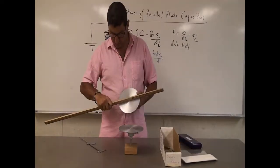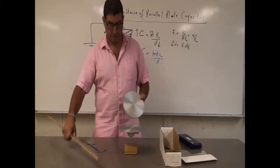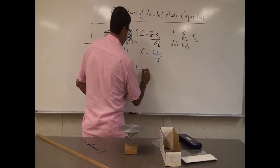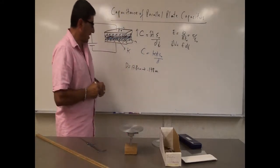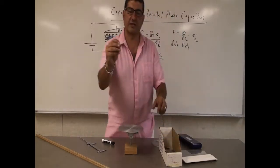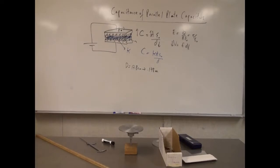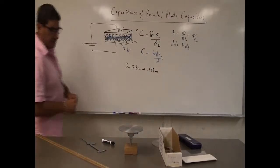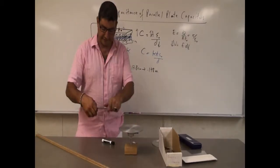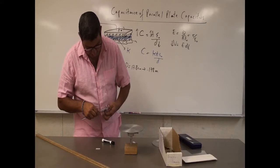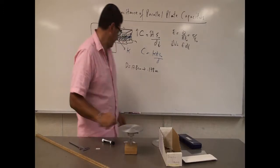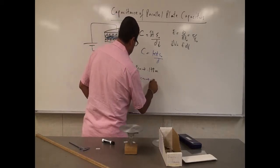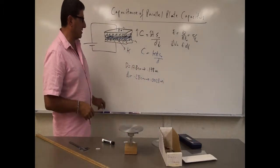Let's measure the diameter: 17.8 centimeters, which is 0.178 meters. I can use different kinds of separators. One kind is this white material — I'll use three of these to separate the plates. I need to measure the thickness of one: 0.28 centimeters, which is 0.0028 meters. That's going to be my D value — the distance of the air gap.